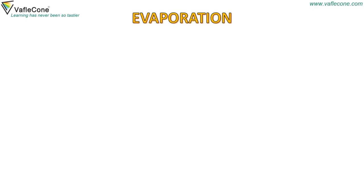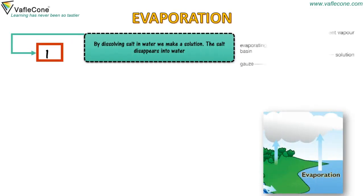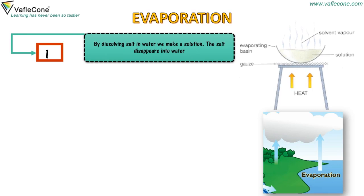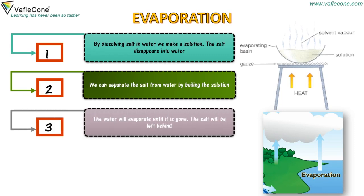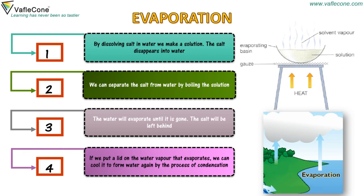Evaporation. By dissolving salt in water, we make a solution. The salt disappears into the water. We can separate the salt from water by boiling the solution. The water will evaporate until it is gone and the salt will be left behind. If we put a lid on it, the water vapor that evaporates can be cooled to form water again by the process of condensation.